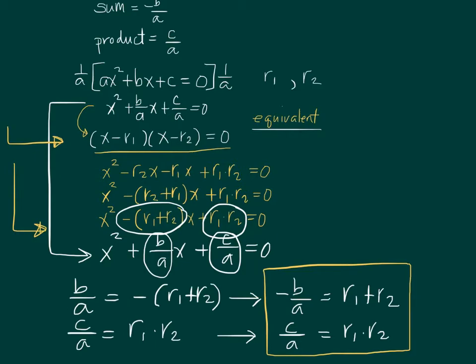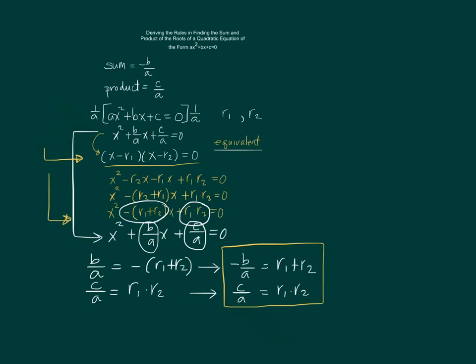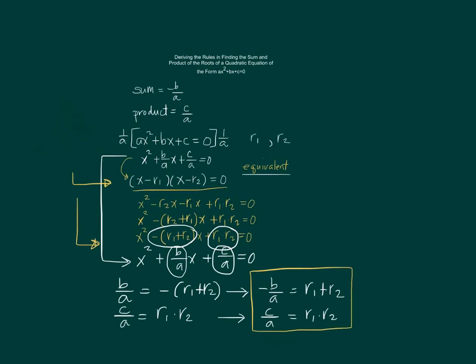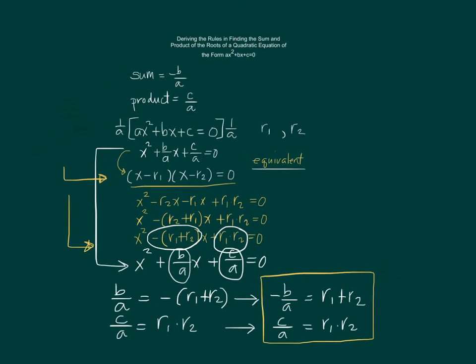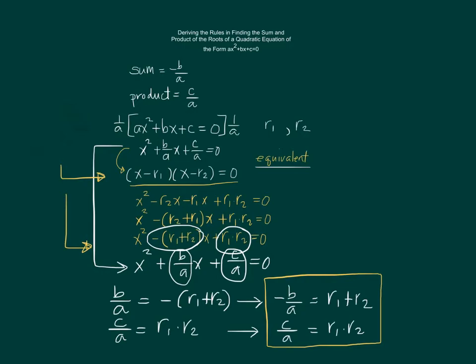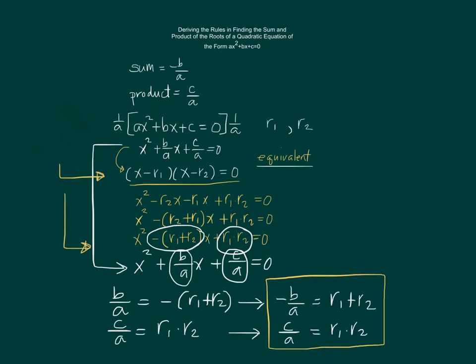I hope you understand now how these formulas were derived. There is no magic behind it — these formulas came from the quadratic equation ax squared plus bx plus c equals zero. So that's it.